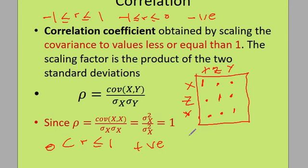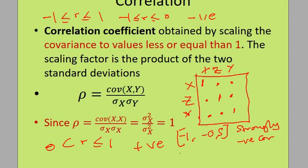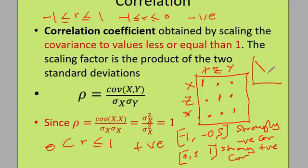We can put specific ranges on correlation strength. If the correlation is between minus one and minus 0.5, we say the variables are strongly negatively correlated. If it is between 0.5 and one, there is a strong positive correlation. A negative correlation means one variable increases while the other decreases. A positive correlation means both are increasing — an increase in Y will affect an increase in X.